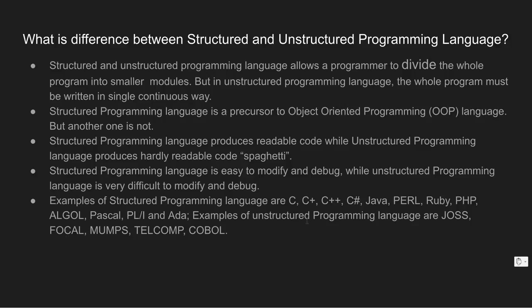Examples of Unstructured Programming Languages are JOSS, FOCAL, MUMPS, TELCOMP, and COBOL. These are unstructured programming languages.